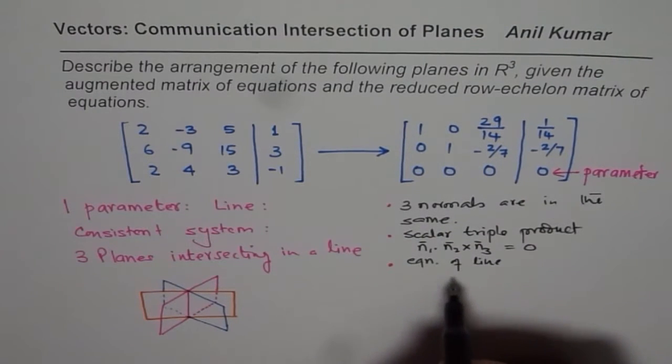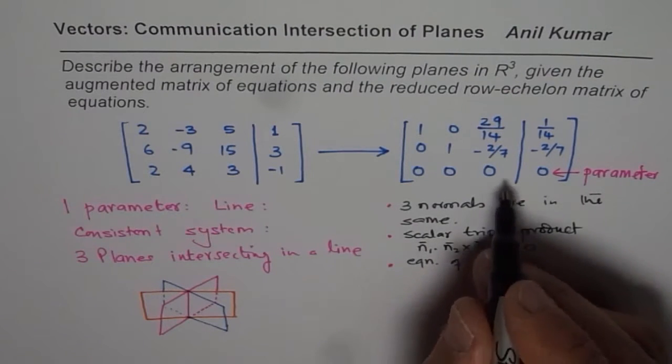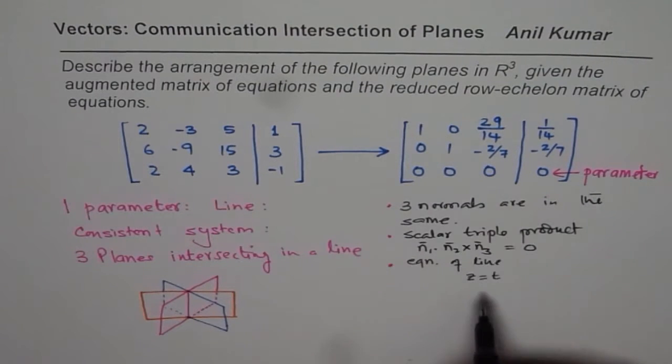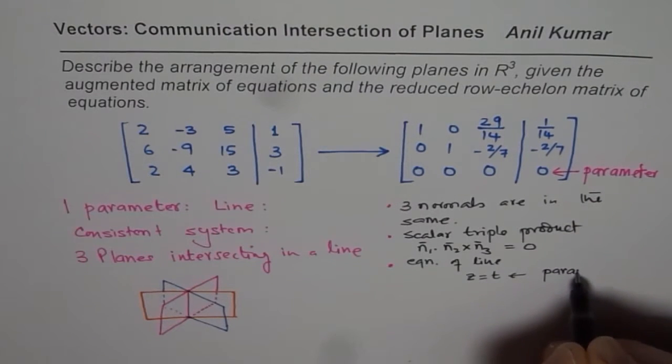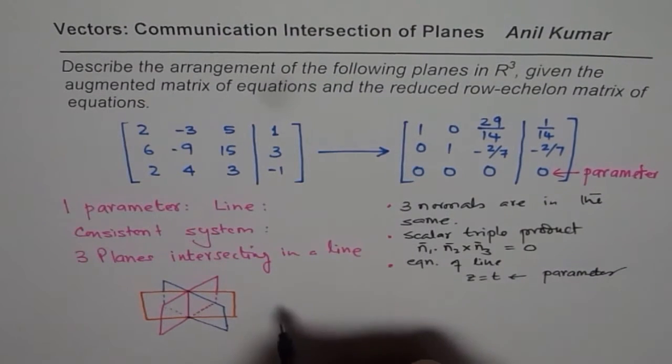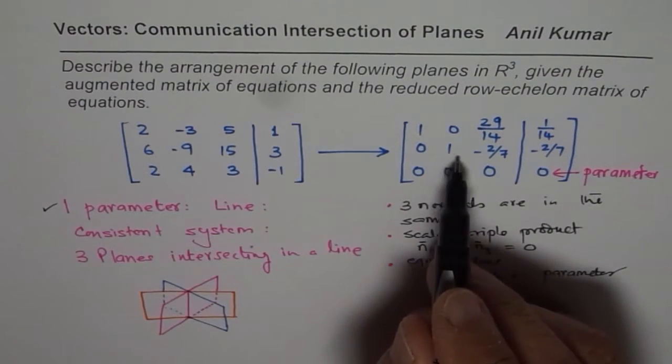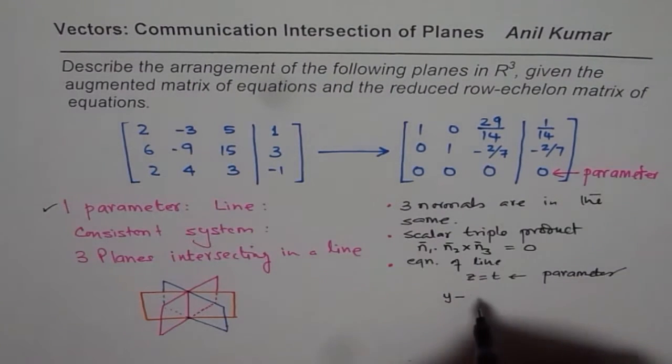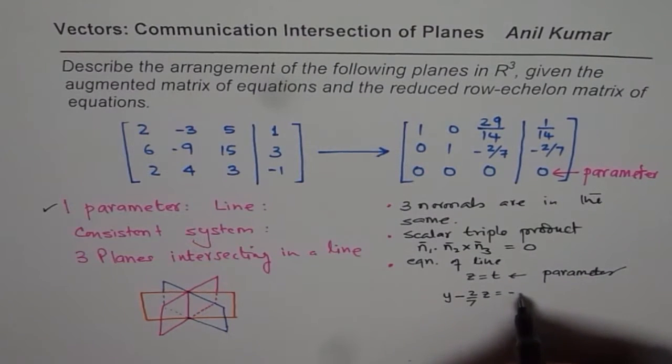Let that be a part for you to do. From the third equation we can write Z equals T. That would be simple. That is one parameter. We are saying T is a parameter for us. So one parameter, correct?